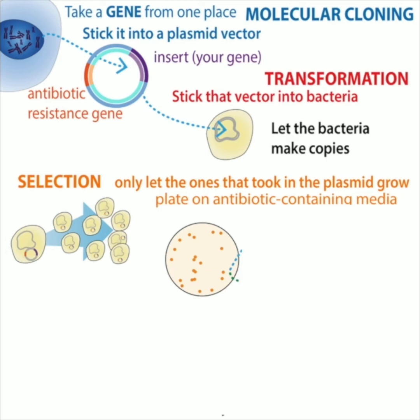For example, if you have an ampicillin resistance gene, it would be resistant to ampicillin. So if you plate the bacteria after you do that transformation — you put the bacteria on a petri dish filled with food spiked with ampicillin — then only the bacterial cells that have actually taken in that plasmid, and hopefully that plasmid has your insert, will be able to grow and divide. They do that on top of each other to form these gooey clumps called colonies, and all other bacteria will get killed out.